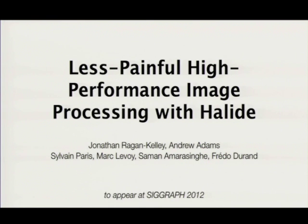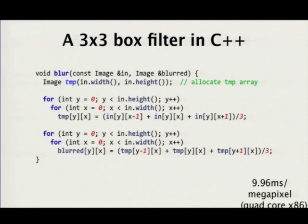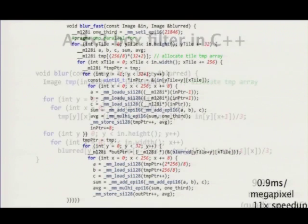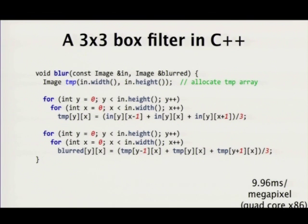Let's look at an example. This is a very simple algorithm — a 3x3 box filter decomposed into a horizontal filter followed by a vertical filter. I've allocated some temporary storage for the output of the horizontal filter that I then vertically filter. With guard bands to ignore boundary conditions, even with all compiler optimizations turned on, this is 10 times slower than the optimized version on the same CPU.